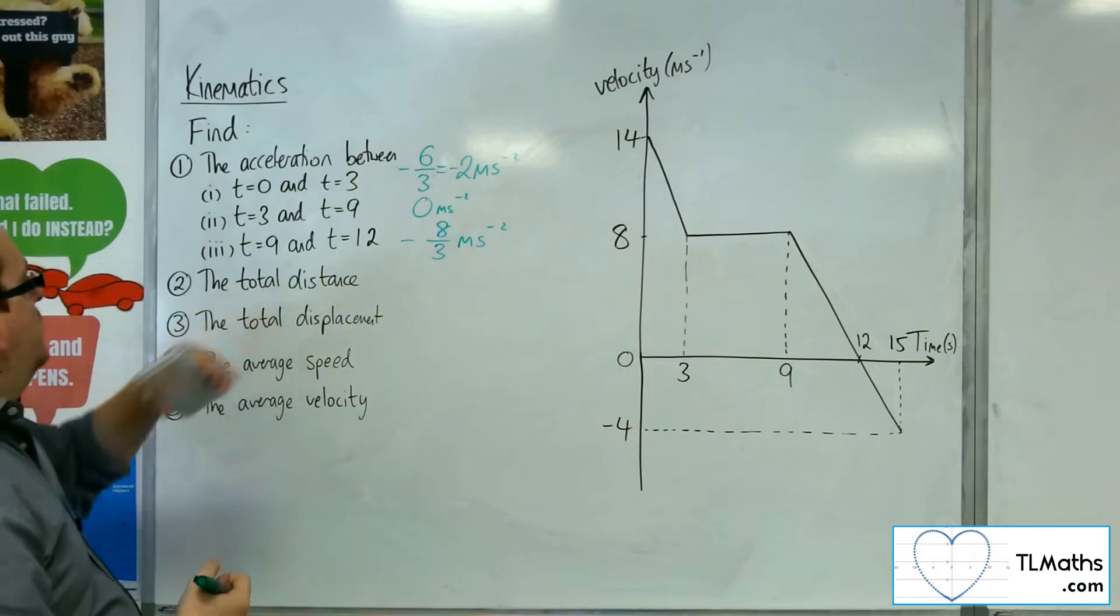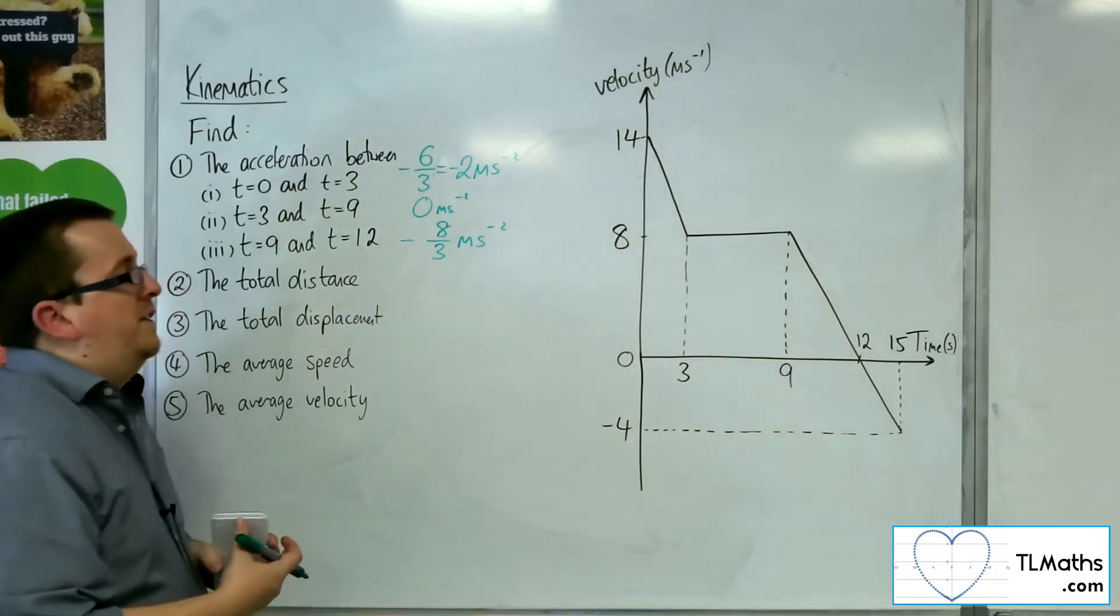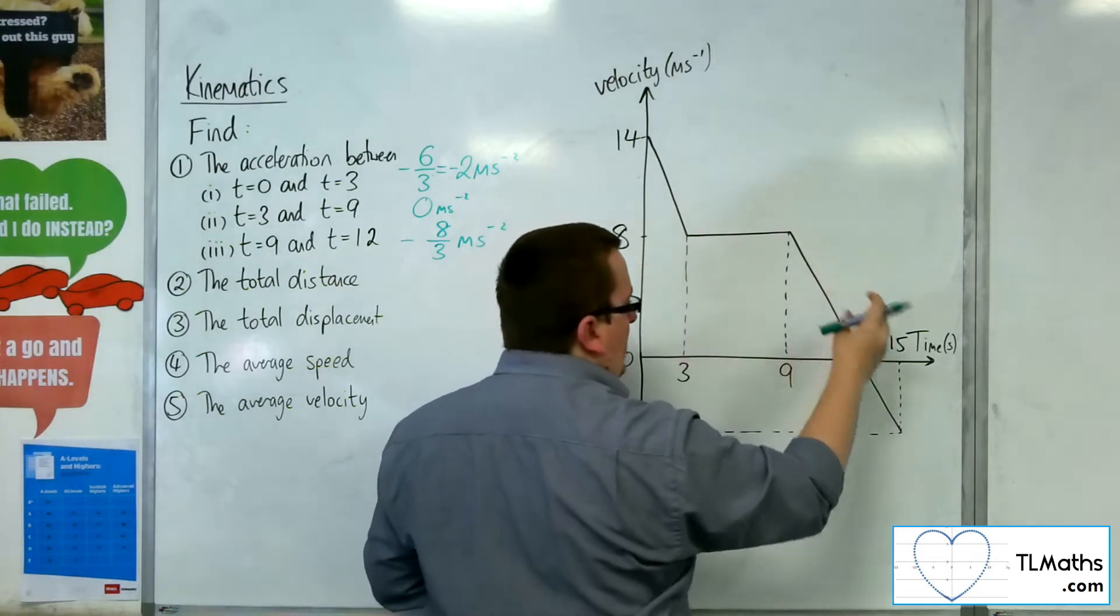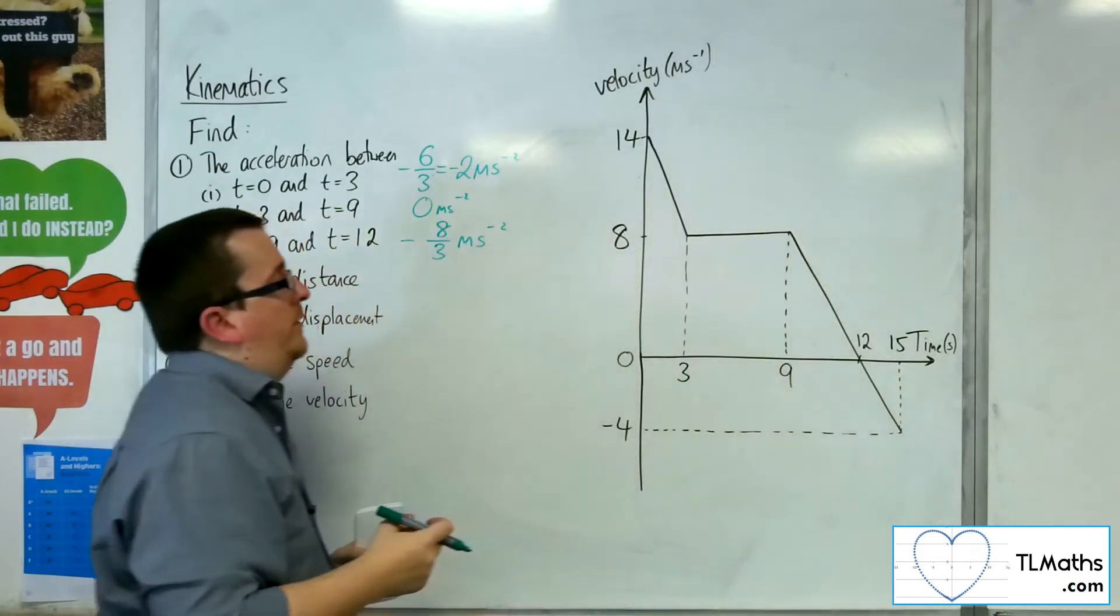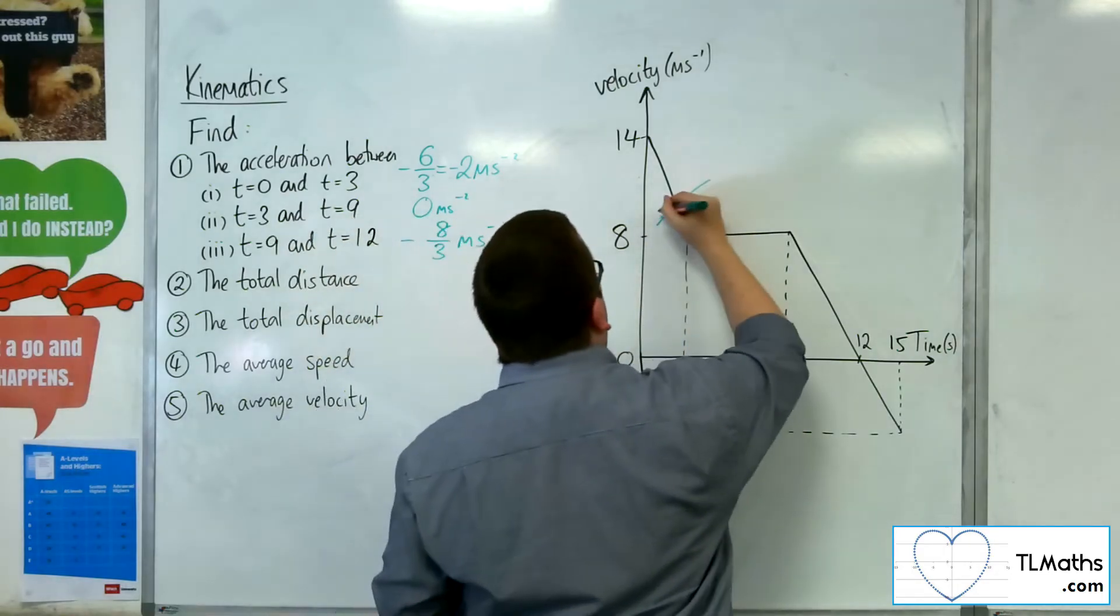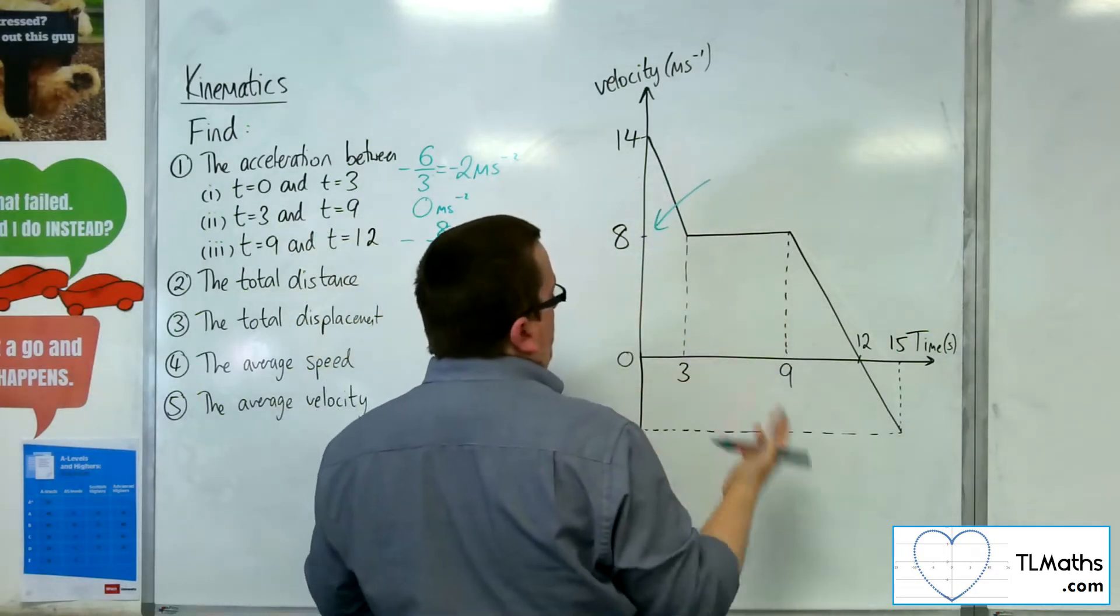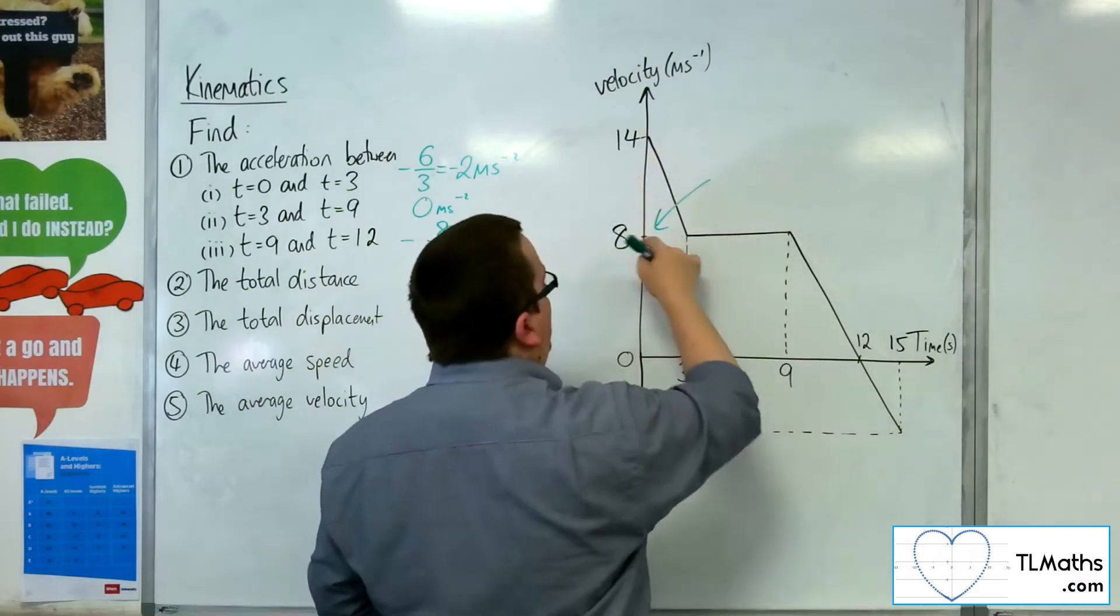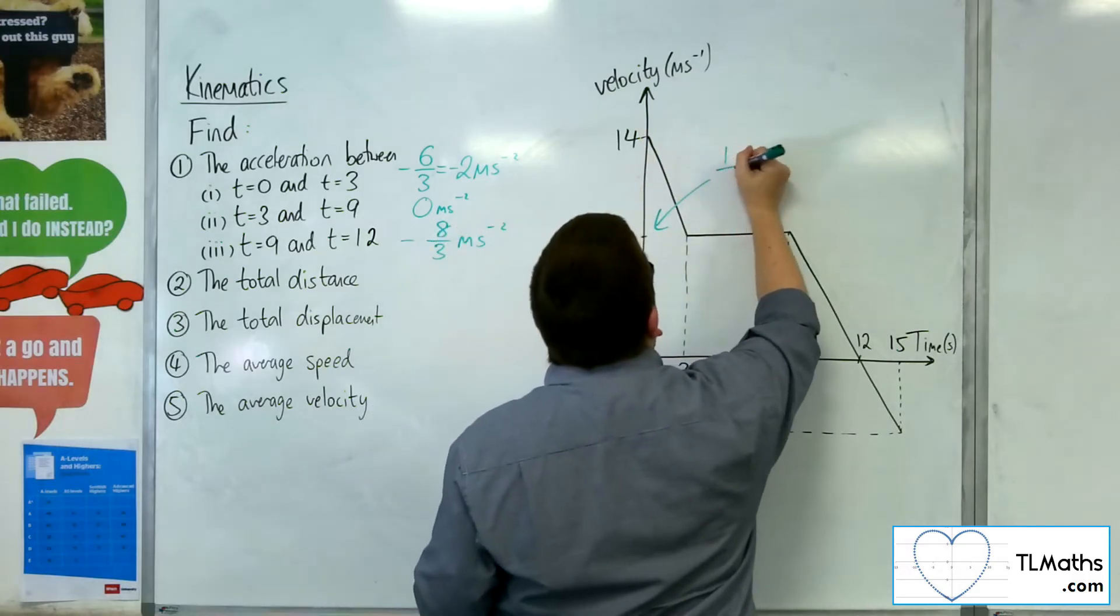So the total distance. Now the total distance will be the total area of these four sections. So the first section we've got is this one. So this is a trapezium. So you could work this out either as a triangle plus a rectangle, or you can use the trapezium formula.